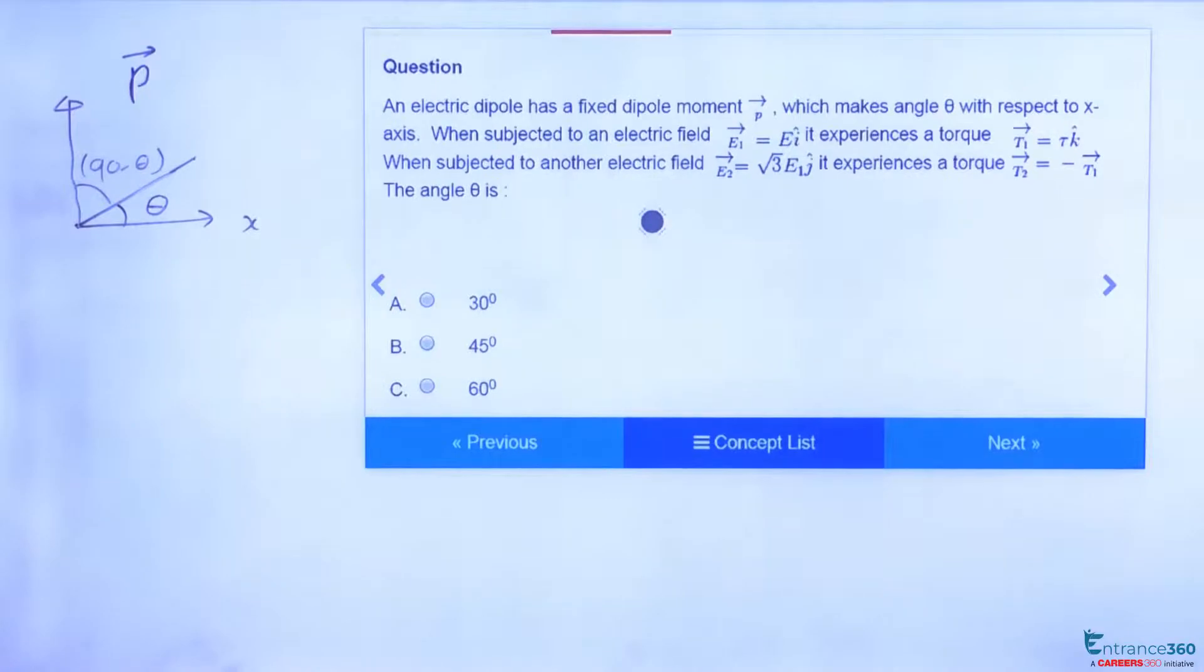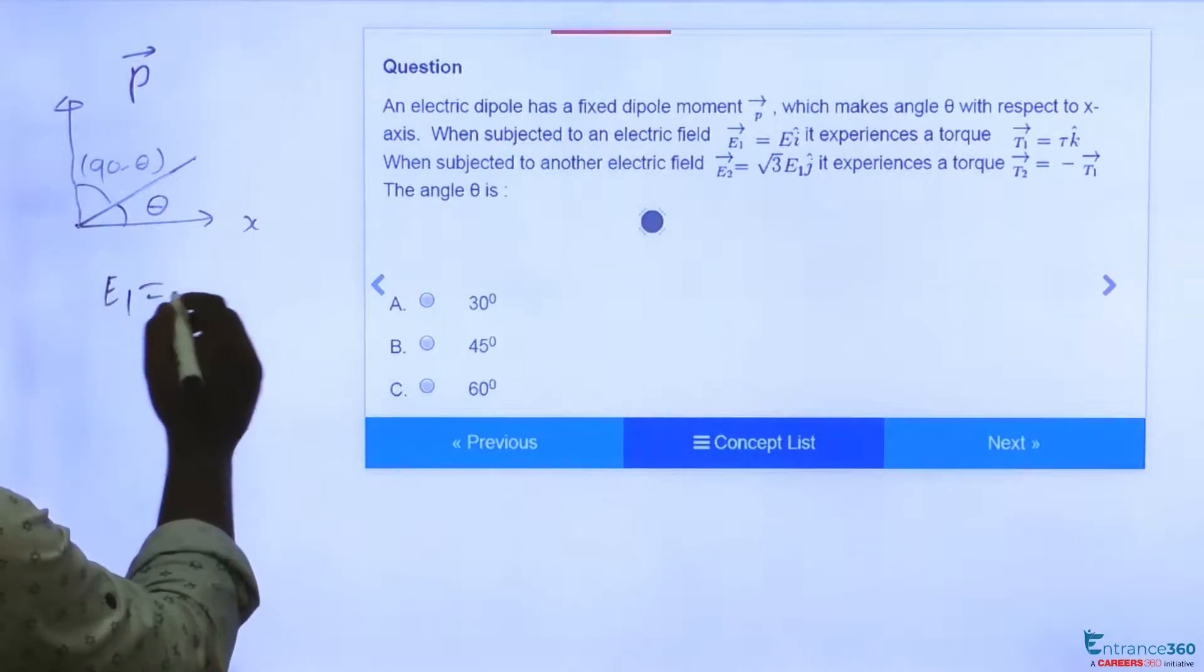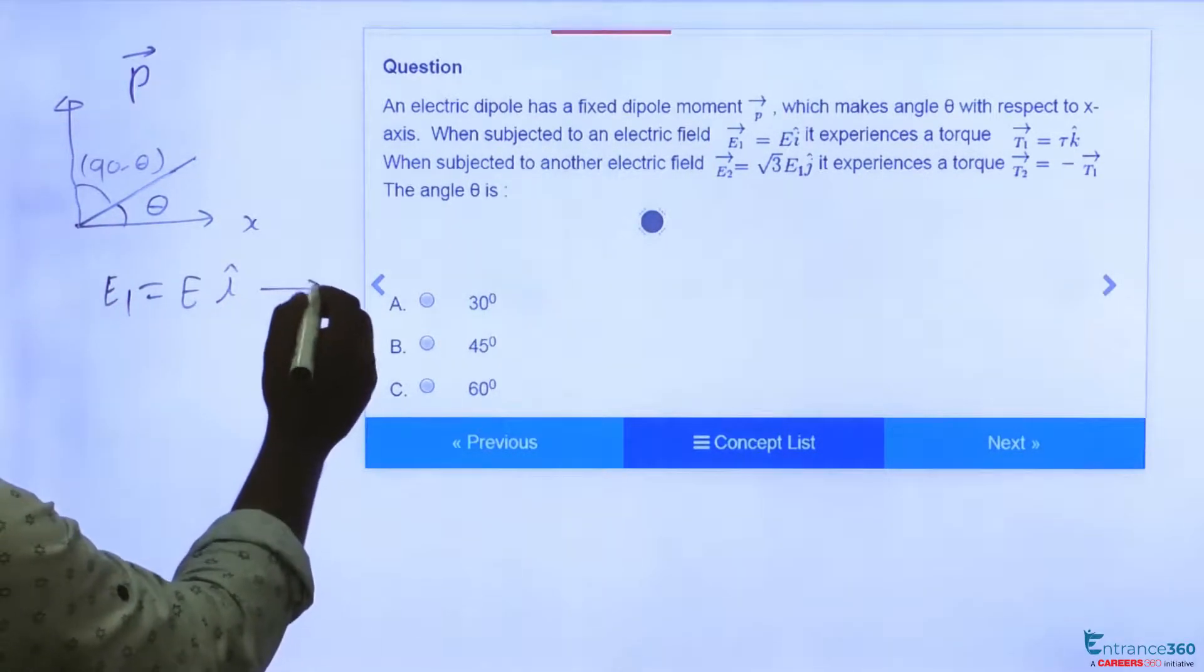Then we have two conditions. One says when electric field E₁ equals E i cap, which means in x direction.